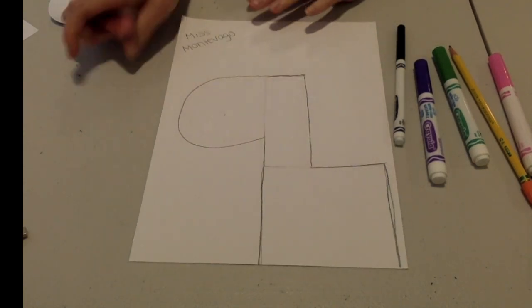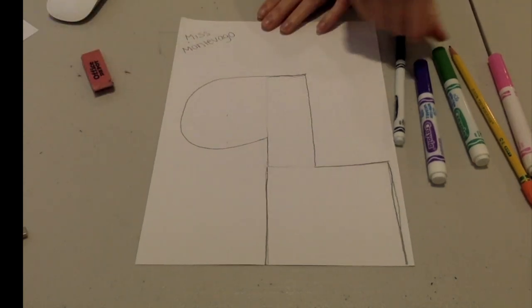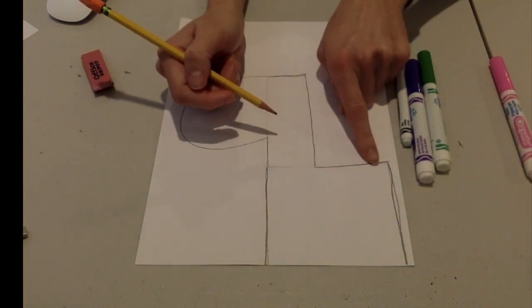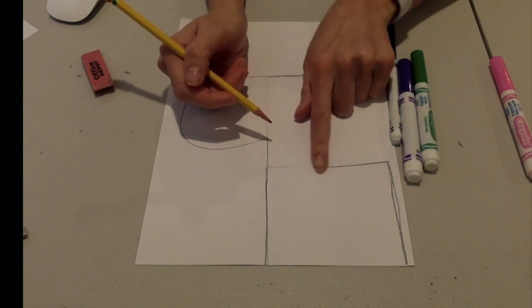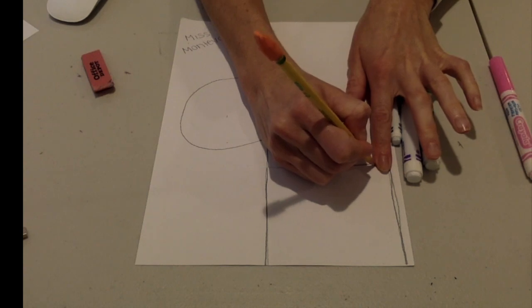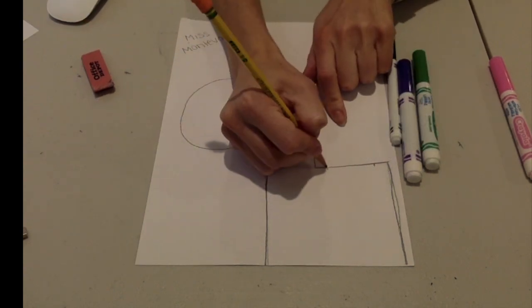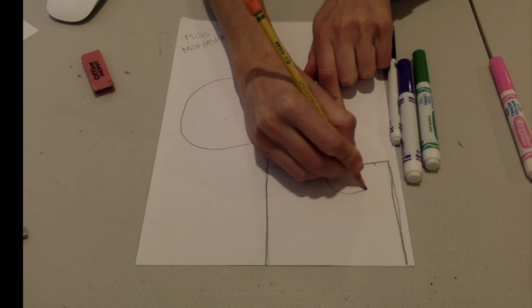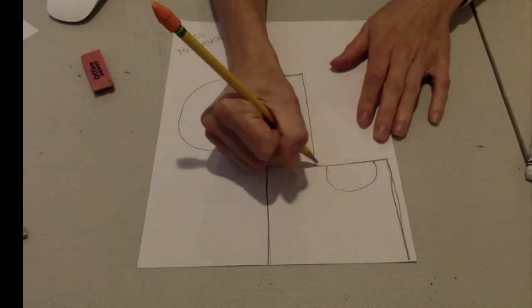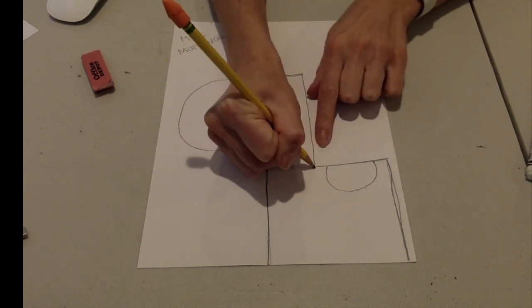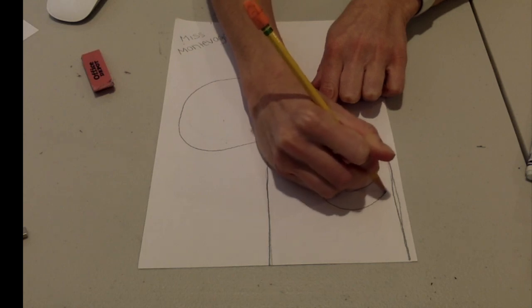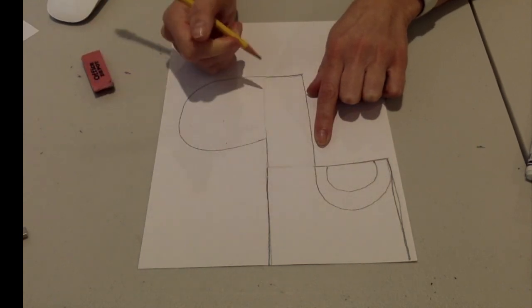Now we're going to start making the saddle or blanket that is going to go on the llama's back. So grab your pencil and I'm actually going to have you take one finger and measure the width of your finger on each side so that it's even. Now use those two points to help guide you to draw a semicircle. Perfect. Now you're going to go to the point where the two rectangles meet and use that as a guide to draw a larger semicircle all the way around.